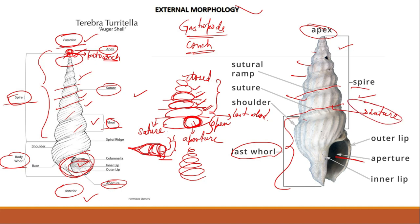The body whorl is the largest, and the part of it farthest from the apex is called the base of the shell. The last whorl is the largest — the part of this last whorl farthest from the apex is known as the base.